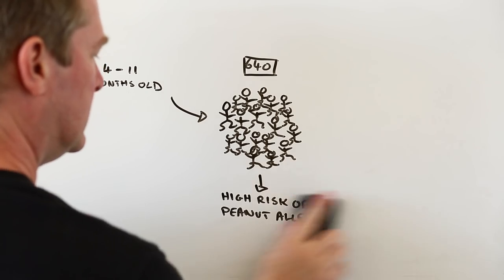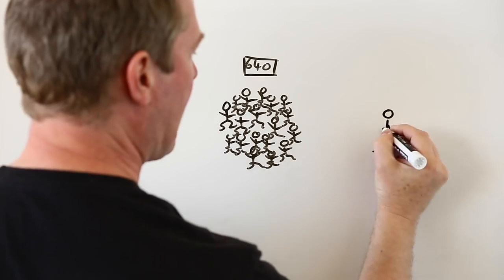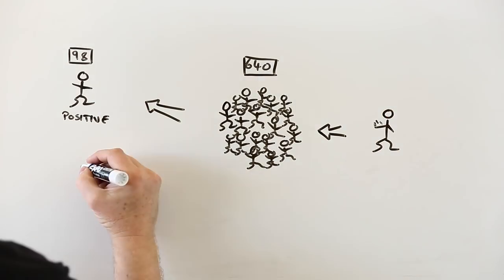Each of these children were then given a skin prick test to see if their bodies were already primed to react to peanuts. 98 of the kids ended up in this especially high-risk group.